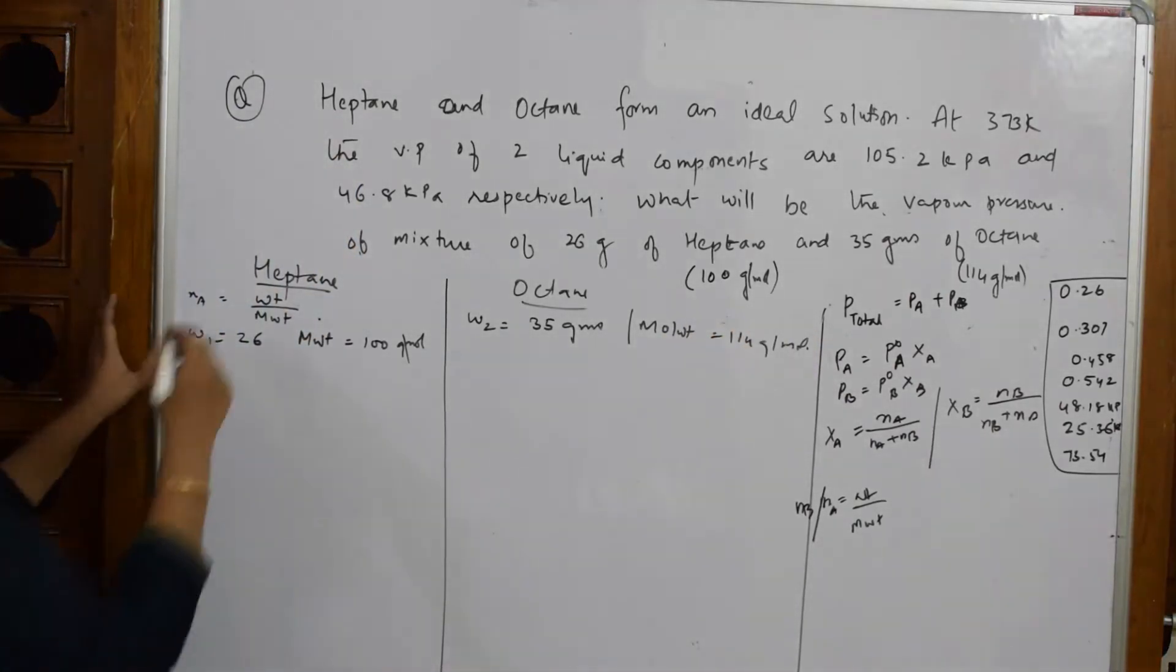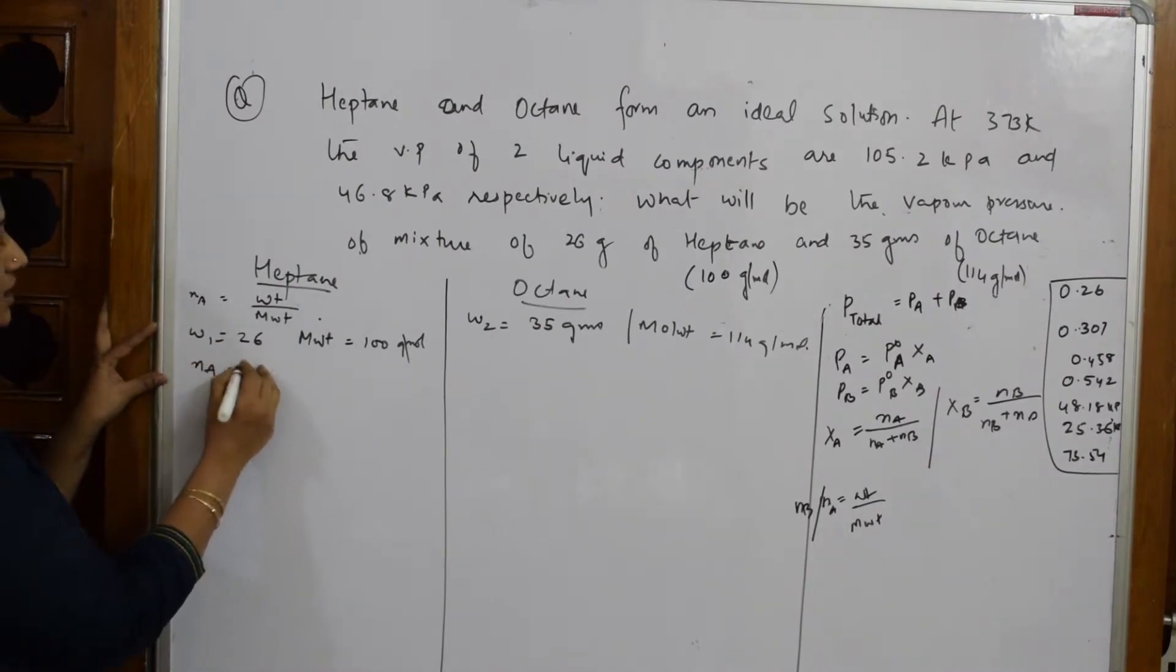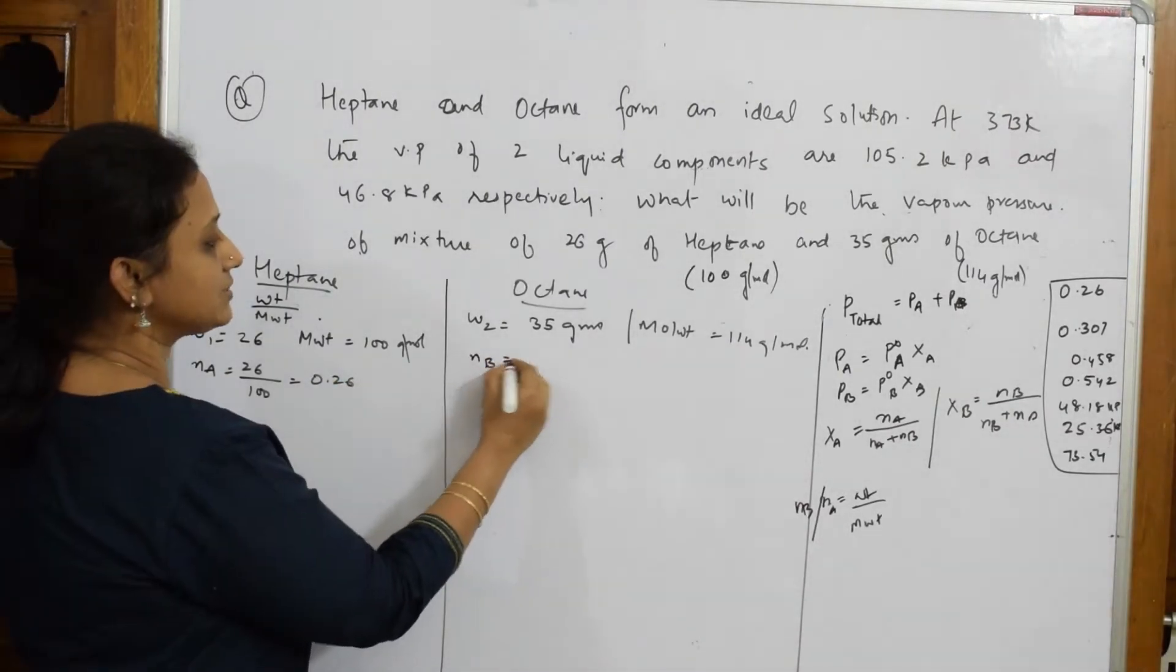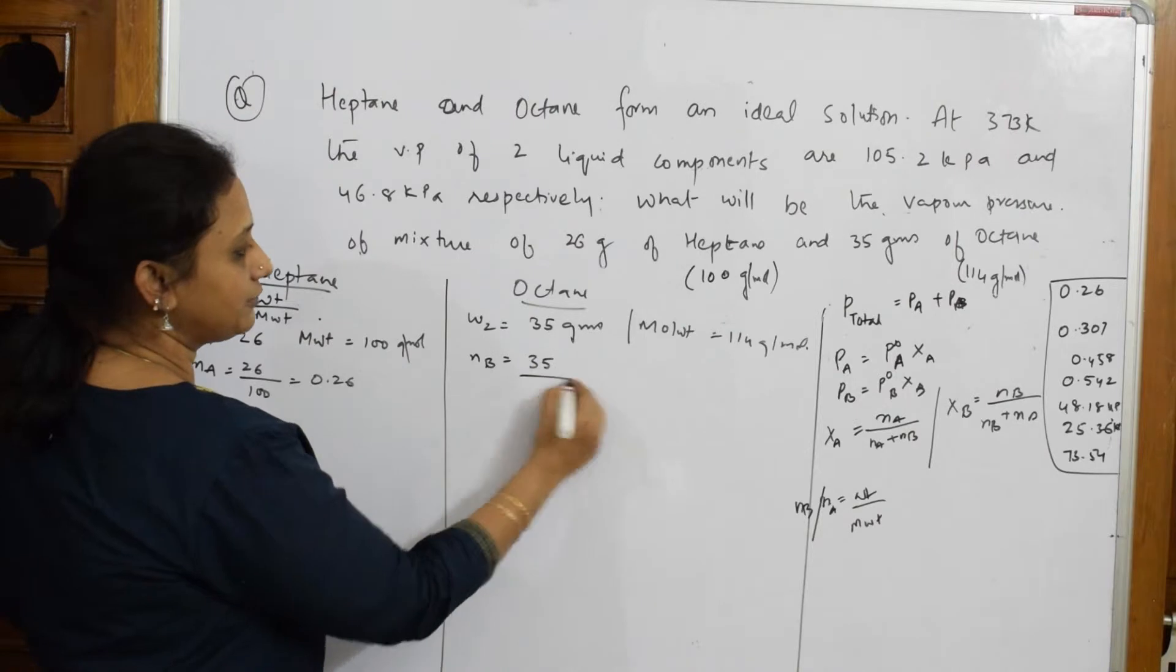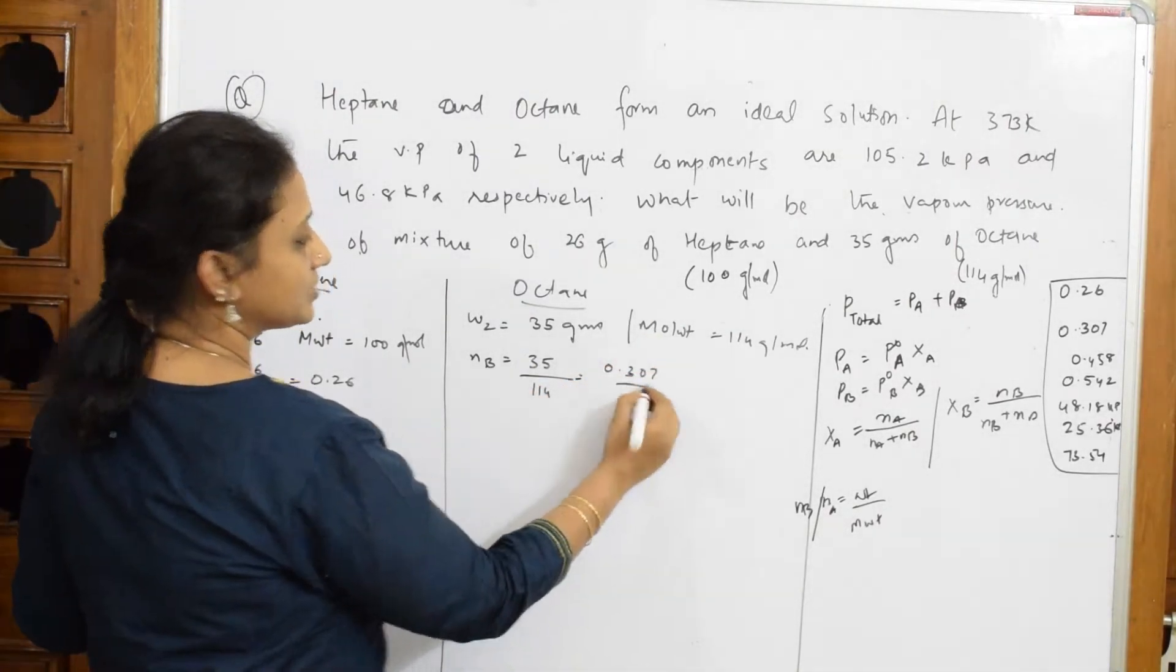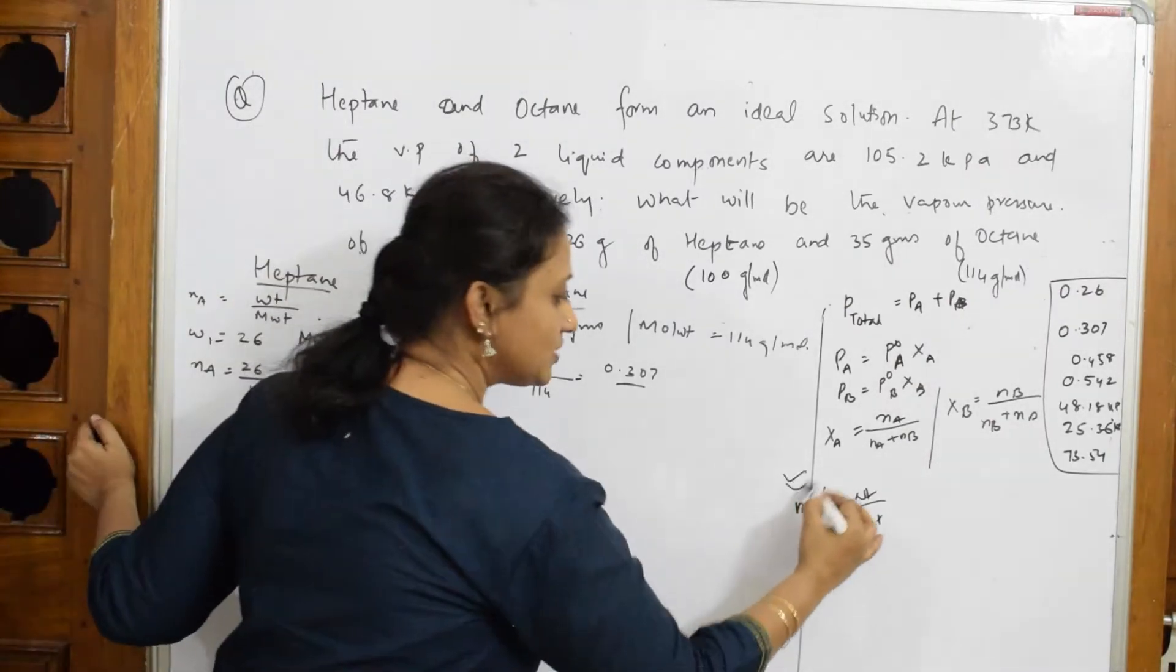Let us come back and do the first one. It is easy. When I solve this, 26 by 100 comes back to 0.26. Let us come back and solve this. NB is equal to 35 by 114. I get 0.307. This is done. My work is solving this part is over.